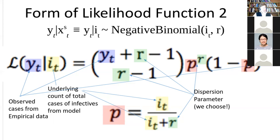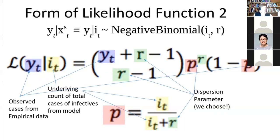The negative binomial has a dispersion parameter R, and we can choose that. The dispersion parameter makes a big difference — it affects how wide and accommodating the likelihood function is. If you give a dispersion parameter that's really large, it leads to narrow likelihoods. You'll be very critical of anything even a little different from what the particle expects, associating it with a very low likelihood value. Conversely, if R is small, it leads to a very broad likelihood.